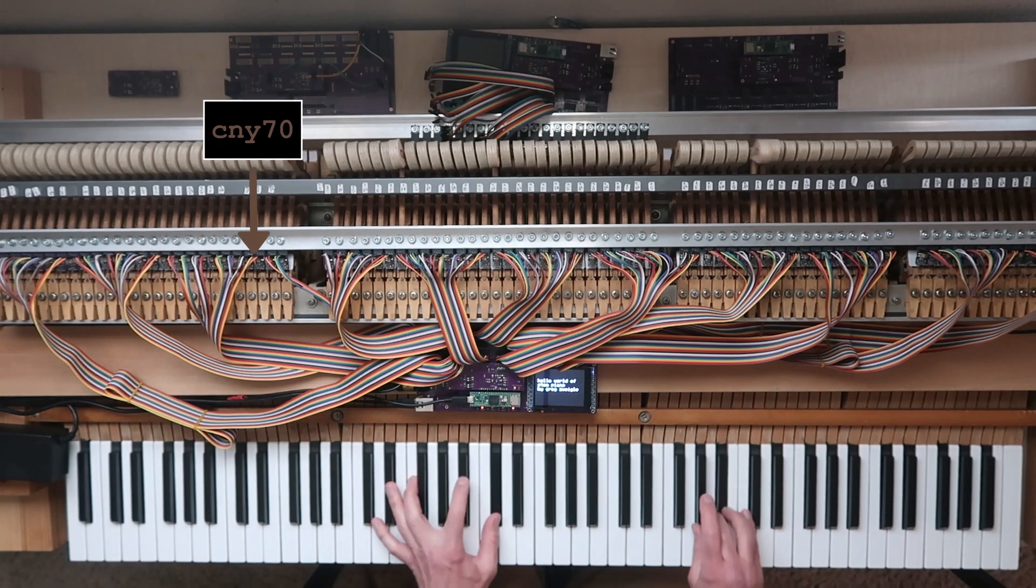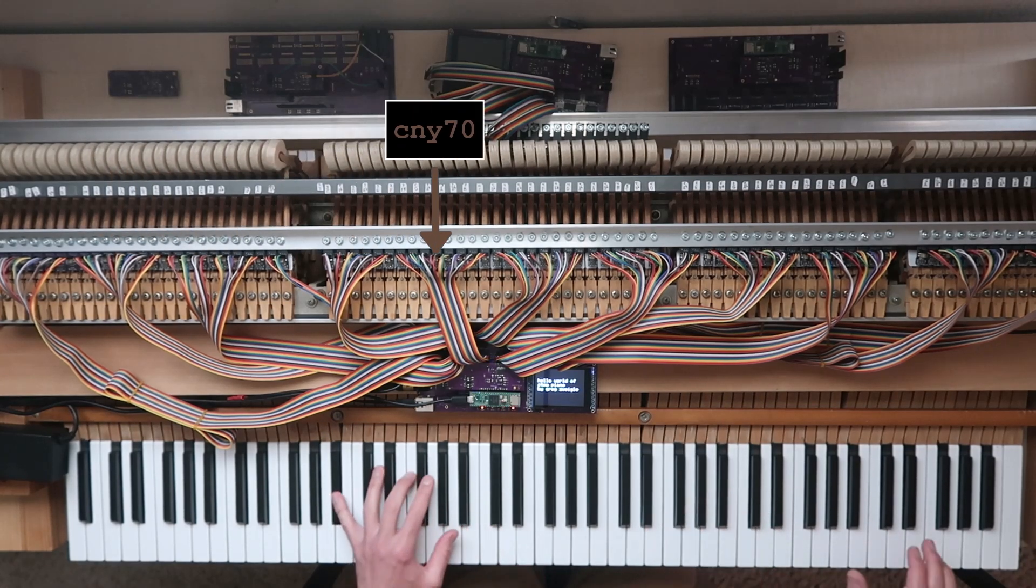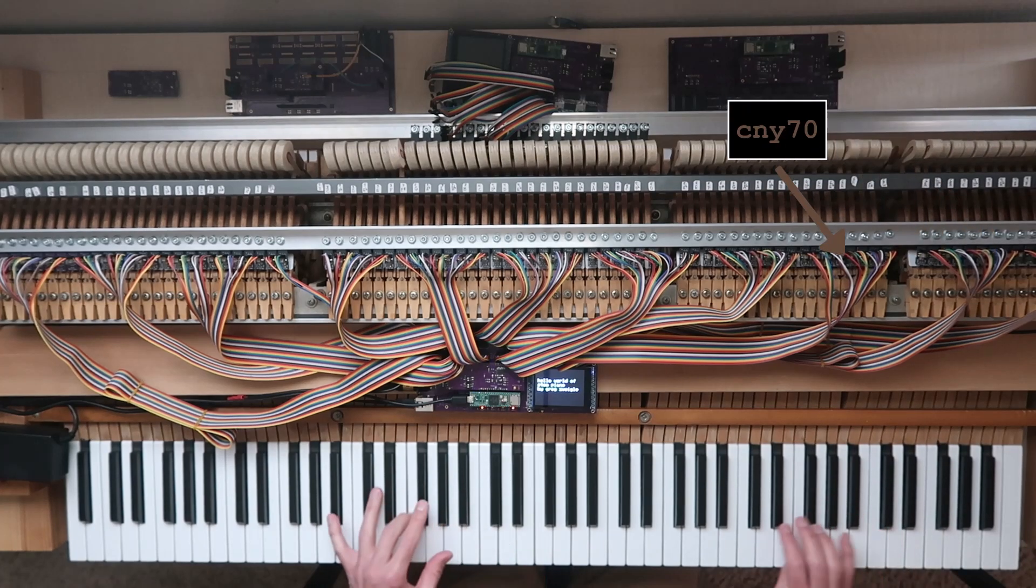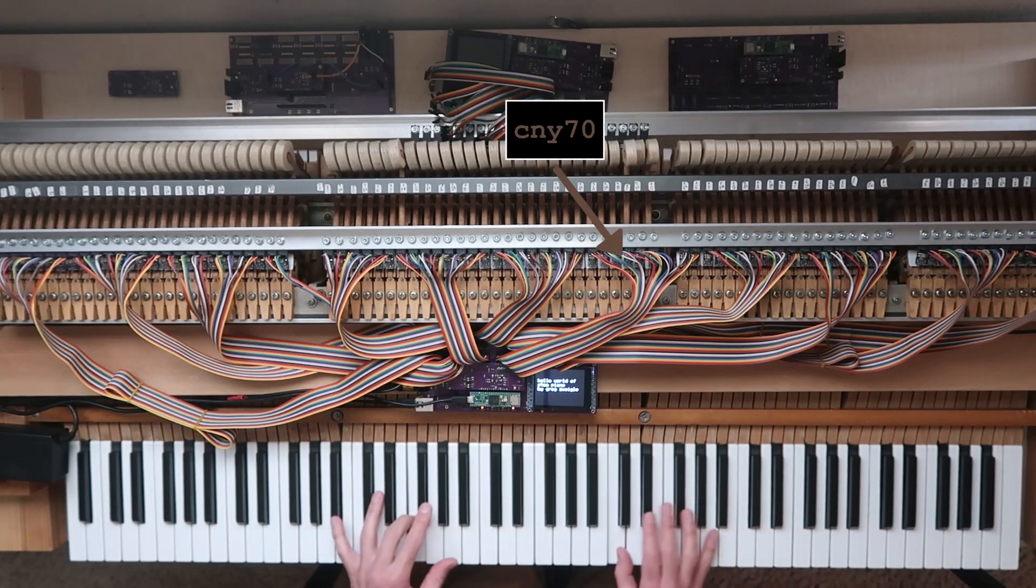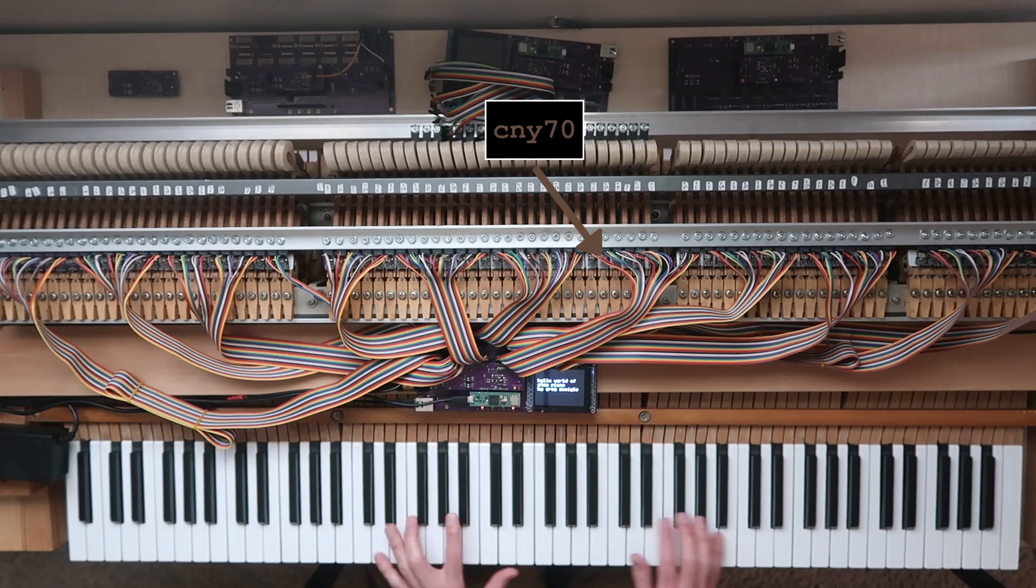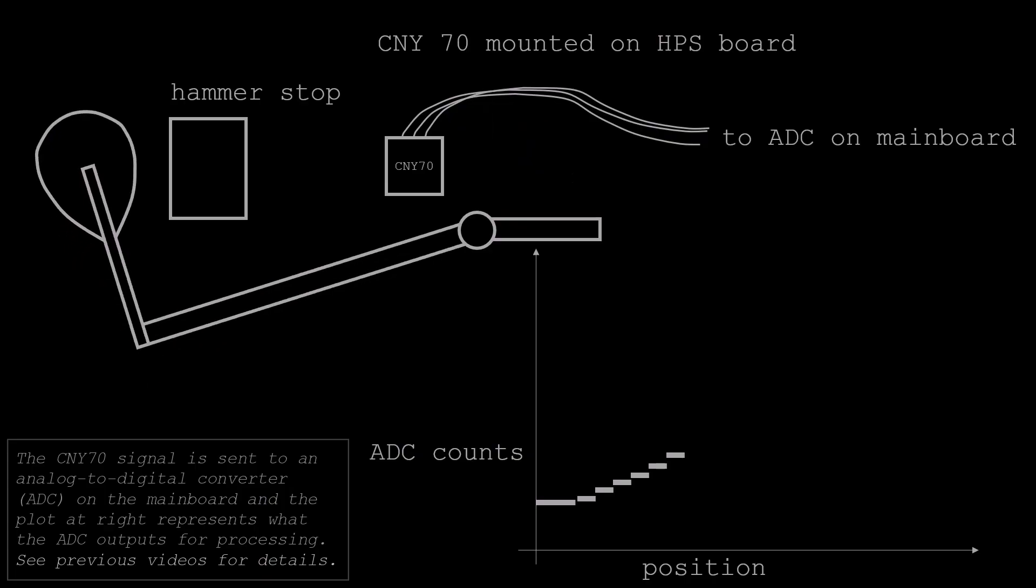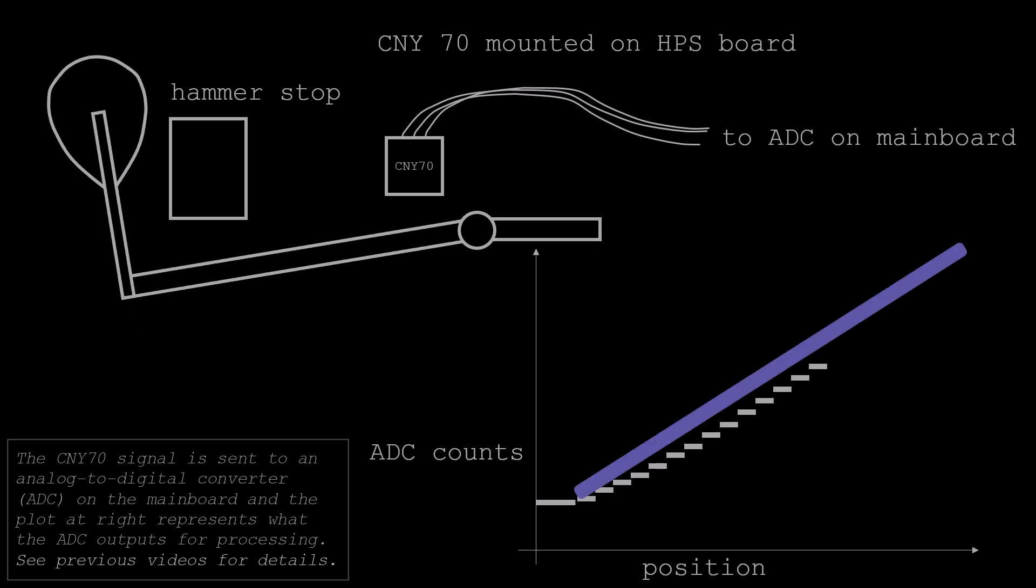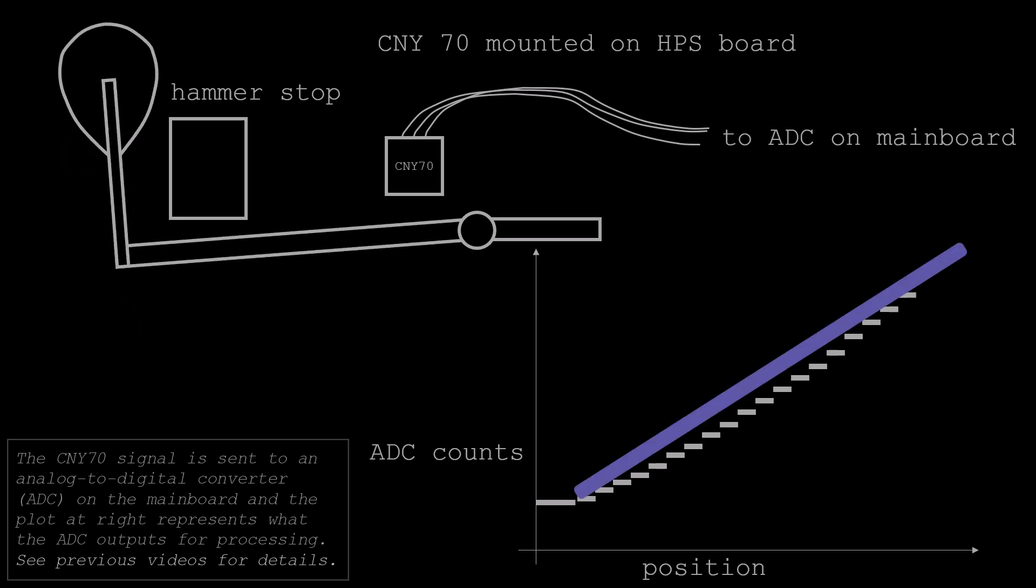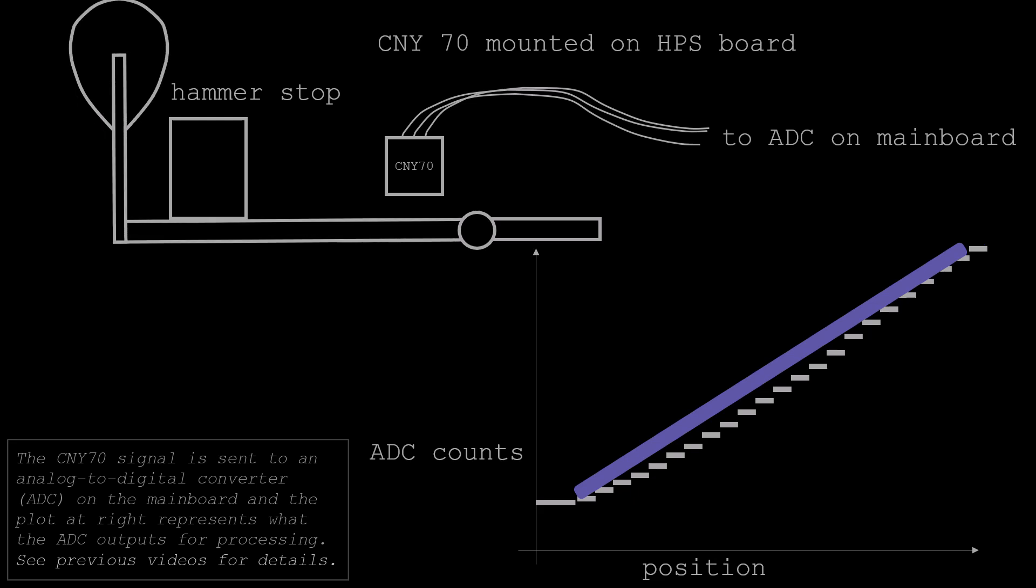Another factor related to note accuracy and consistency to investigate has to do with the CNY70 sensors. These sensors display a known nonlinear response. Ideally the response is a straight line. Can I build a system to calibrate it? First I need to measure the response in the piano.